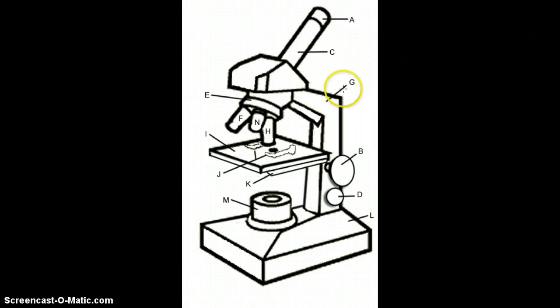G is pointing to the arm. That's where you hold it from when you're carrying your microscope. You hold it with your hand and put your other hand on the bottom of the base so you don't drop it.